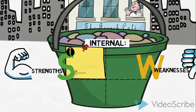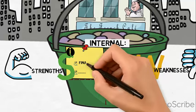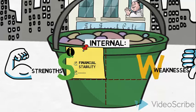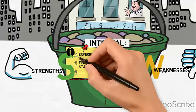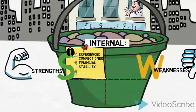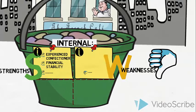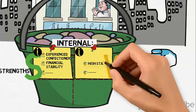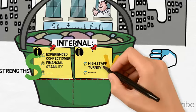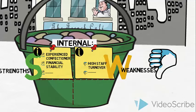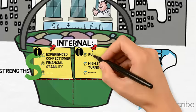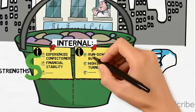Let us start with the strengths. The analysis showed financial stability. And the confectioner is French and highly experienced, which brings great authenticity to the café. Some of the weaknesses revealed by the research were a high turnover of staff, which causes excessive time spent on hiring and training. And the building — it is quite run down, which shows.